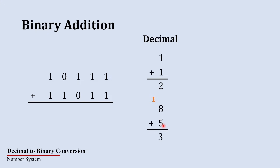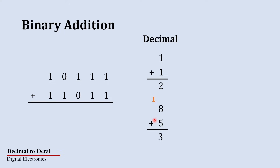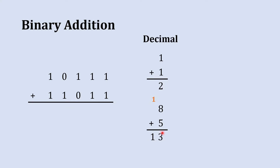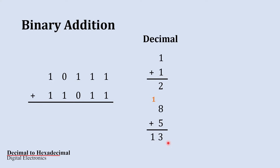In the decimal example, we write the sum as 3 and carry 1 to the next column — if the current column is the ones place, the next column is the tens place. Here, 1 plus 0 gives 1, and the final answer is 13. This is the simple decimal procedure we are all familiar with.